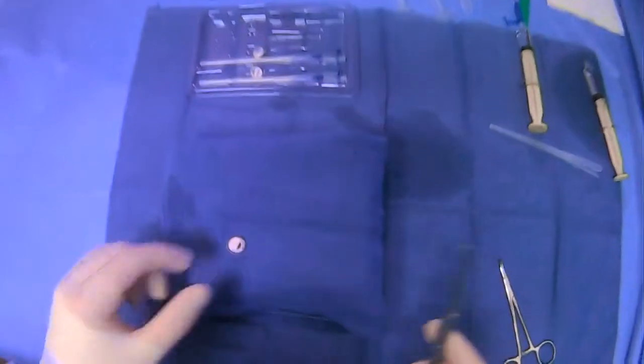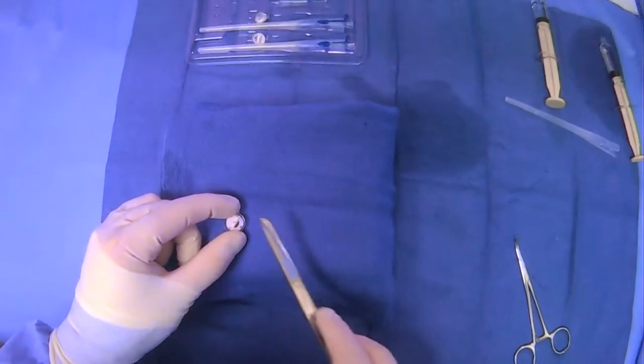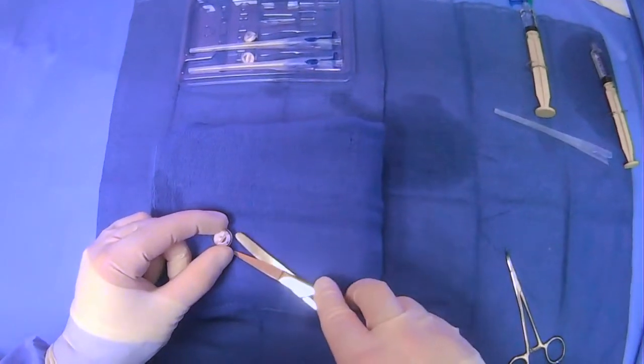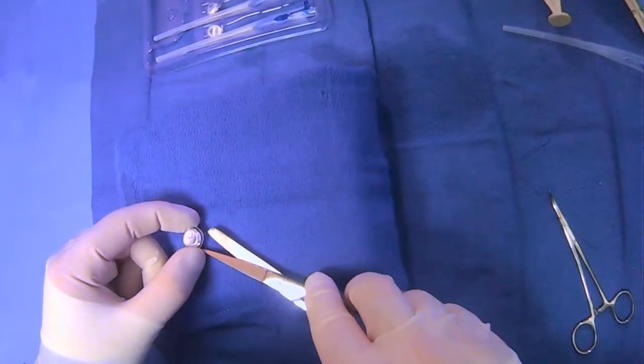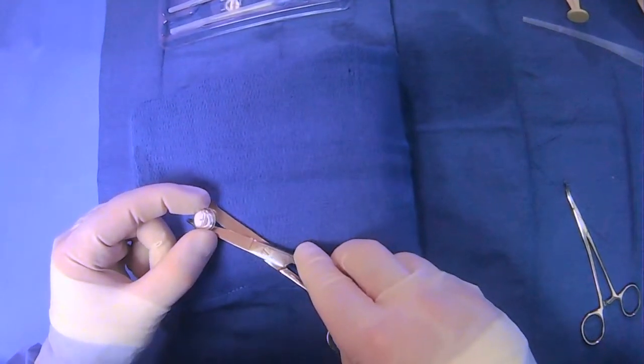And it's very simple. When you have this button area exposed on the skin, all you have to do is go underneath the button and between the skin, and cut the suture that's present there.